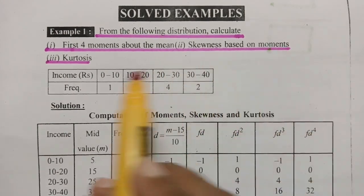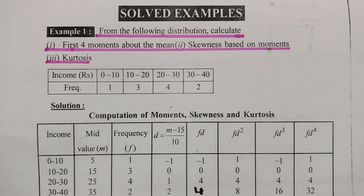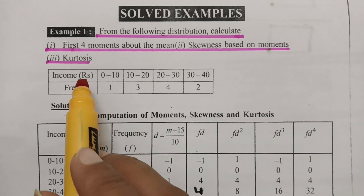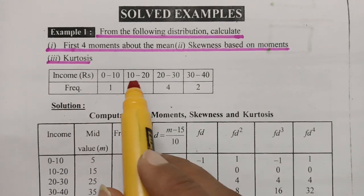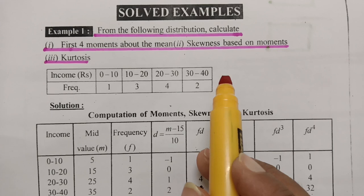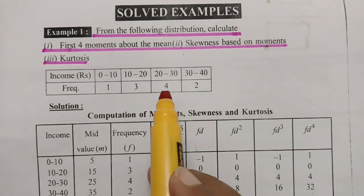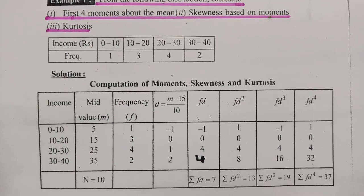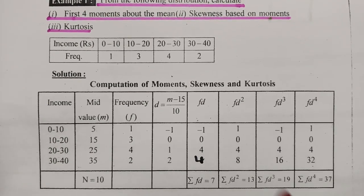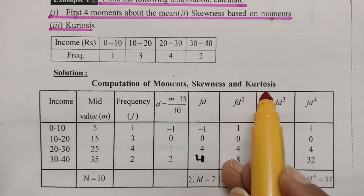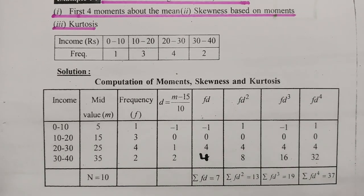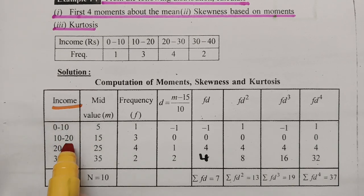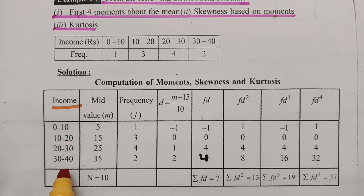Now let's look at the problem: from the following distribution, calculate the first four moments about the mean, skewness based on moments, and kurtosis based on moments. The income and frequency are given. The class intervals are 0–10, 10–20, 20–30, and 30–40, and the frequency values are 1, 3, 4, 2.